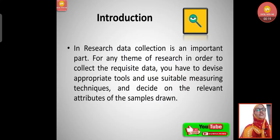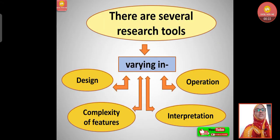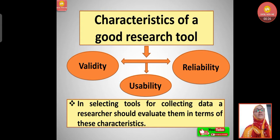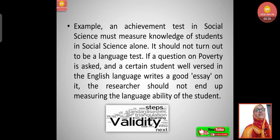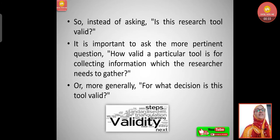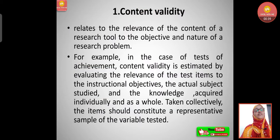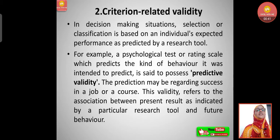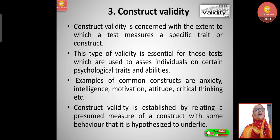In the previous class we understood about tools of research — what is a tool and what are its characteristics. Under characteristics, out of three, we discussed validity and its types: content validity, criterion-related validity, and construct validity. So today we are going to discuss the third characteristic of a good research tool.